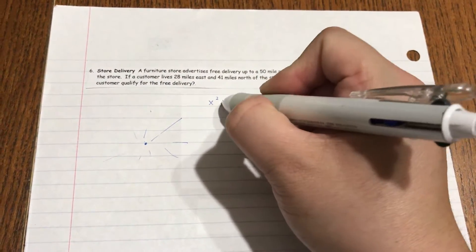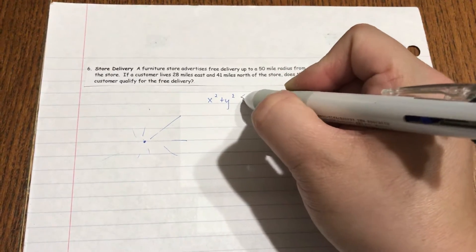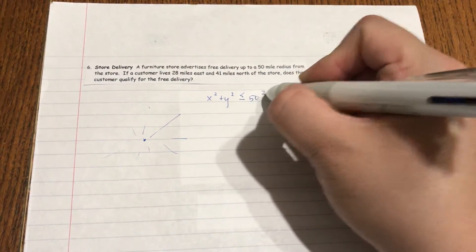So this is really x squared plus y squared has to be within, so less than or equal to 50 miles squared.